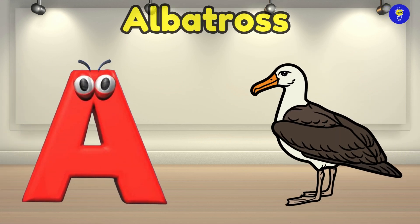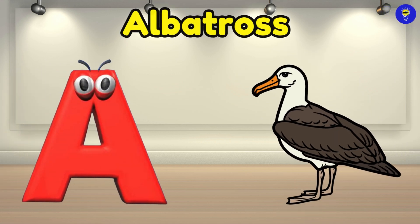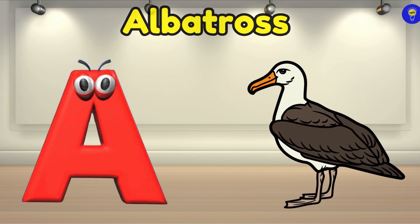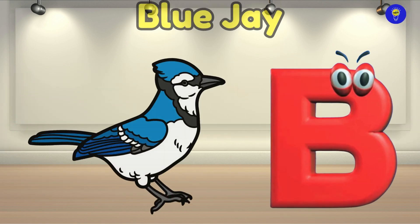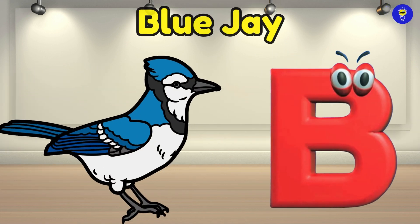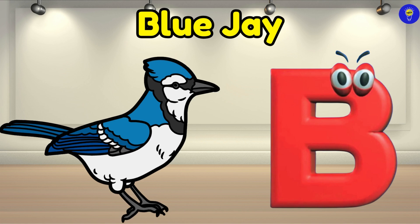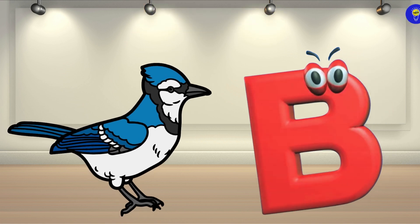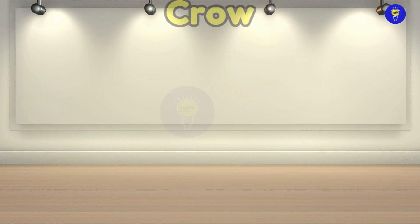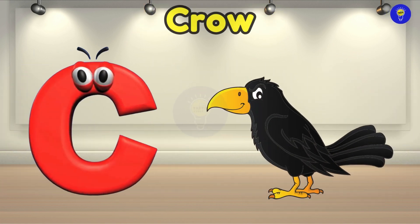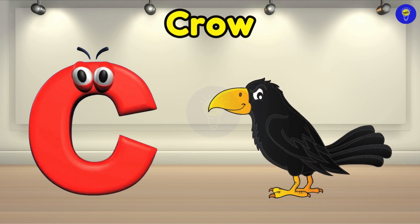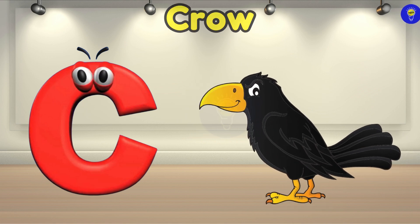A is for albatross. Ah, albatross. B is for blue jay. Buh, blue jay. C is for crow. Kuh, crow.